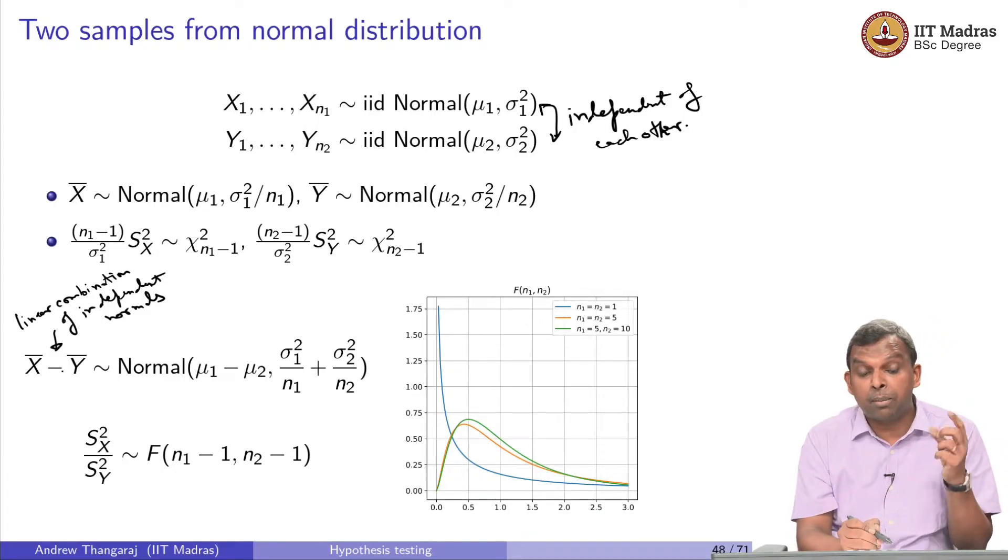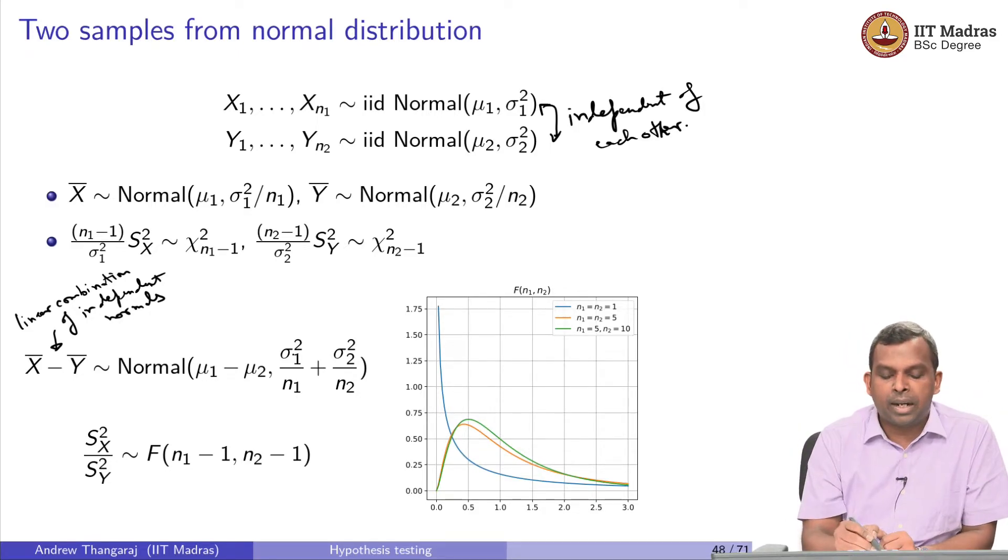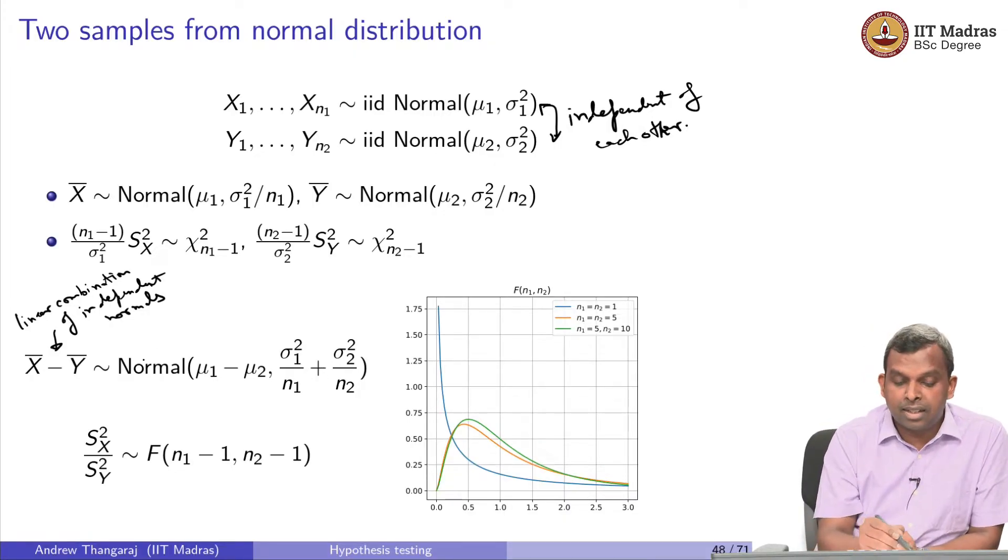Expected value of a linear combination of independent normals, we know what to do. The mean is just μ1 minus μ2 and the variances will add. Even though there is a minus here, do not subtract the variances. The variances will add. Because variance gets multiplied by square of the factor. So minus 1 squared, you will end up getting σ1²/n1 plus σ2²/n2. So this is the distribution for X̄ minus Ȳ.